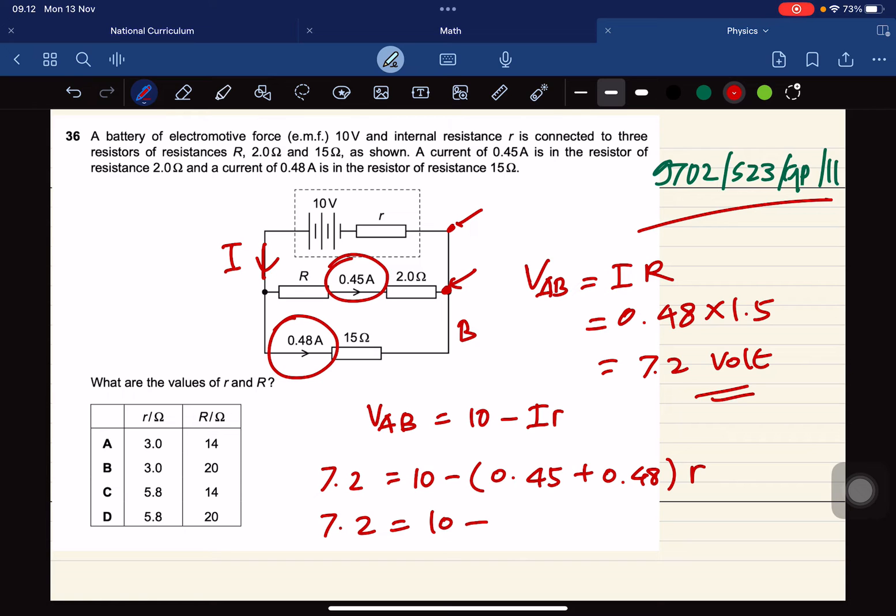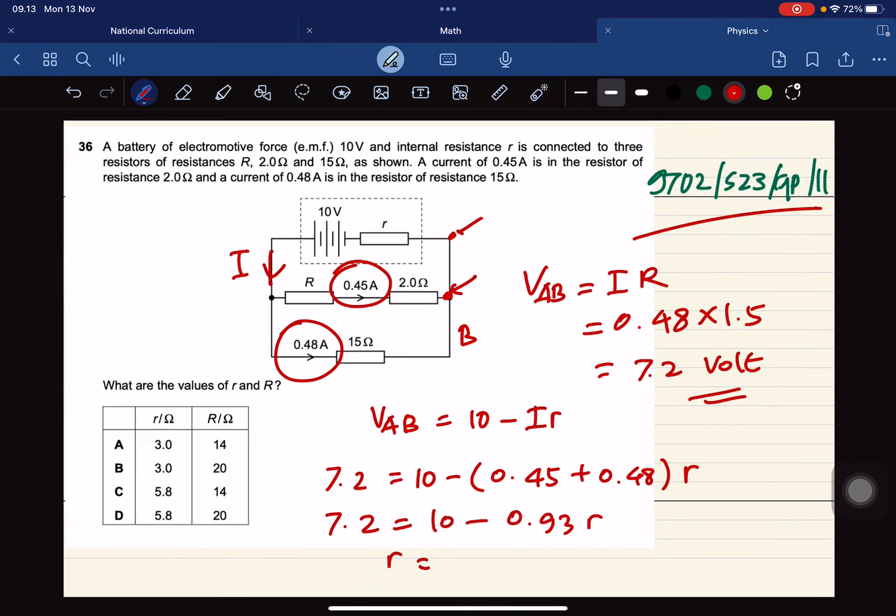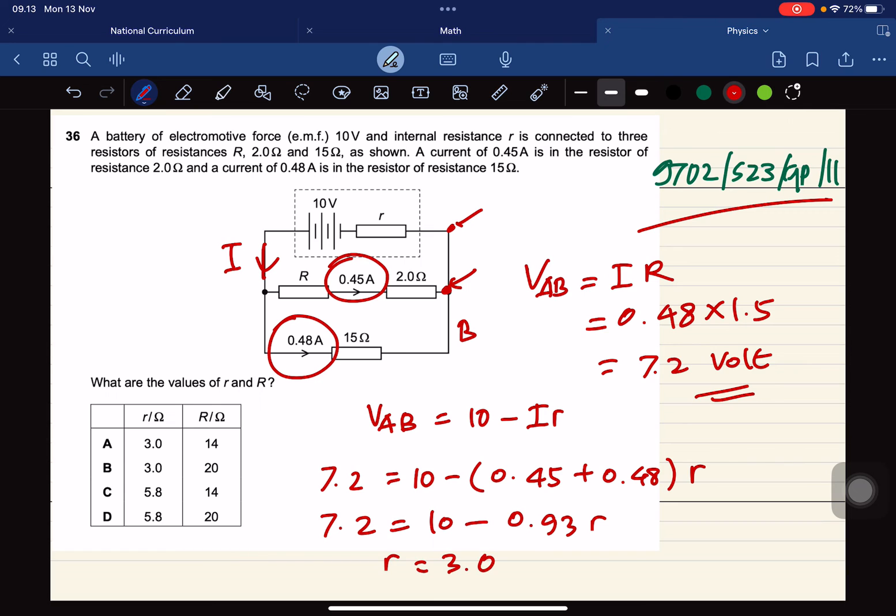0.45 plus 0.48 becomes 0.93. So r equals to 10 minus 7.2 divided by 0.93. This is about 3.0 ohms.